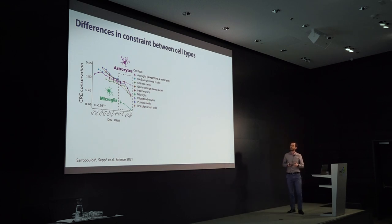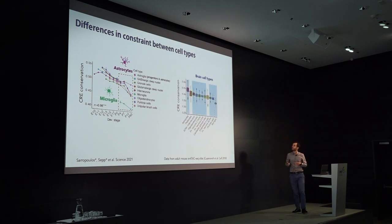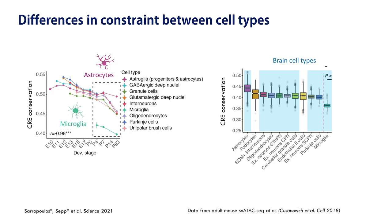To validate these observations, we looked into another dataset covering cell types in the adult mouse across a wide range of organs. What we saw was quite striking: eight out of the ten most conserved cell types in the adult mouse are found in the brain, consistent with the brain being a very slowly evolving organ. Therefore, astrocytes have not only the most conserved CREs in the cerebellum, but in the entire adult mouse, at least across the organs sampled.